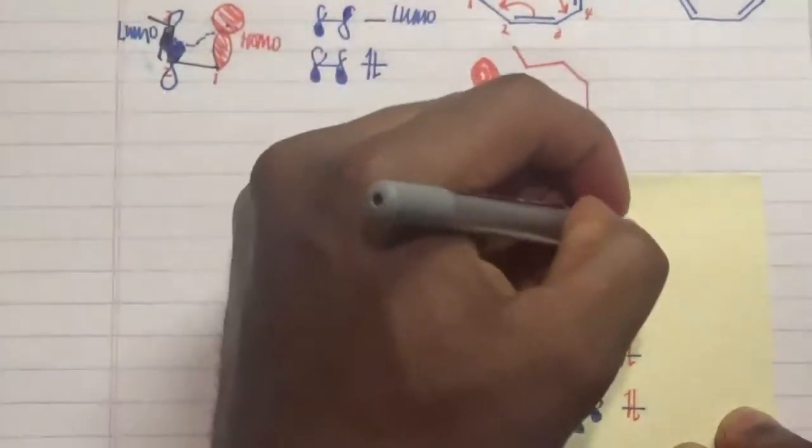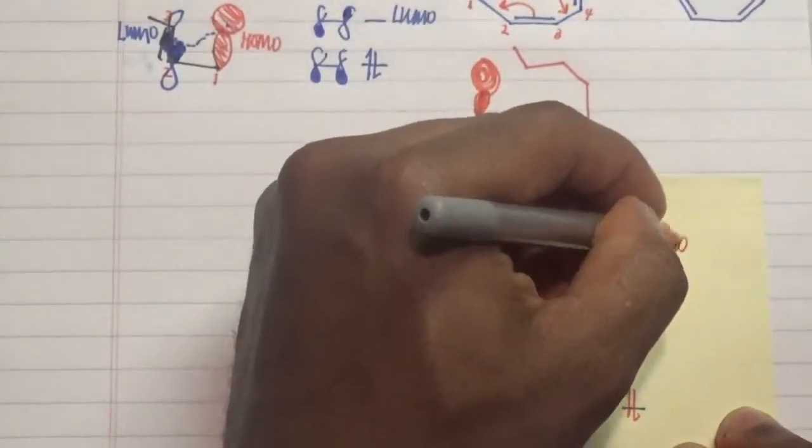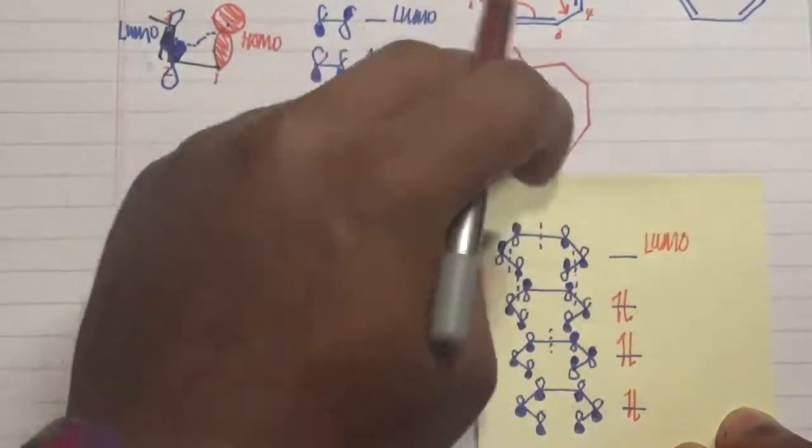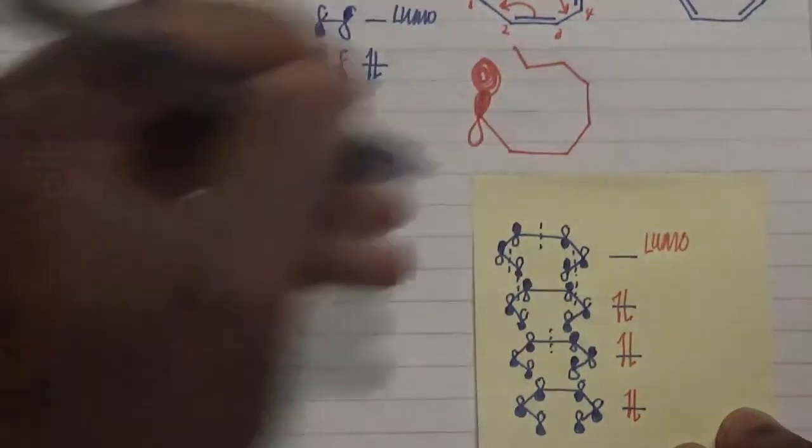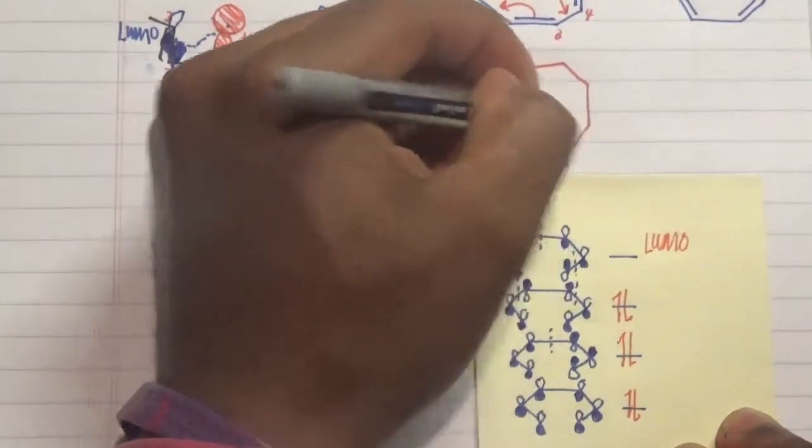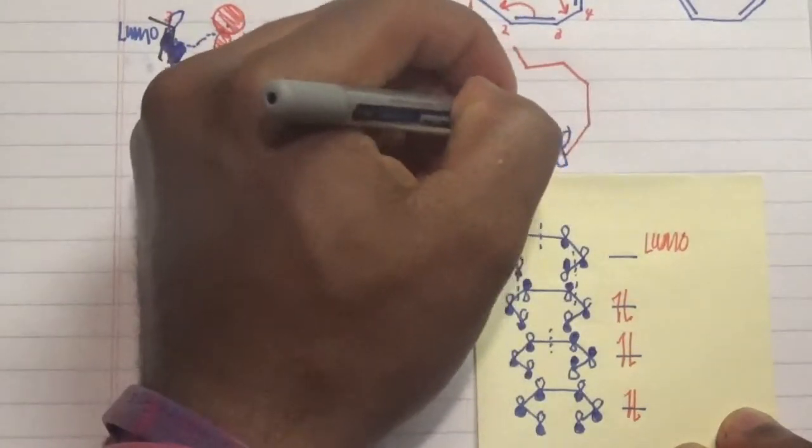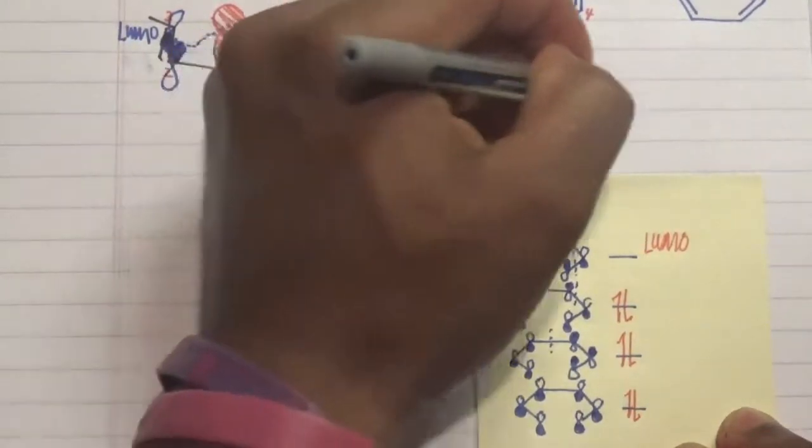Therefore by default, this would be our LUMO. And if we want to translate that into what we have over here, what we have is this, that, but this is out of phase with respect to that.